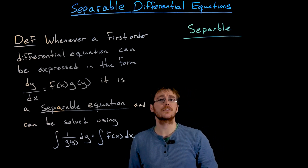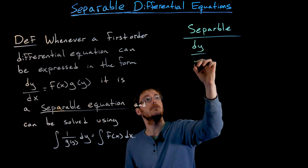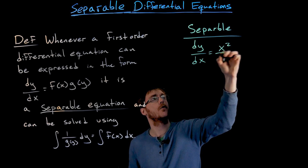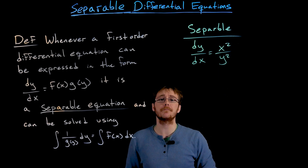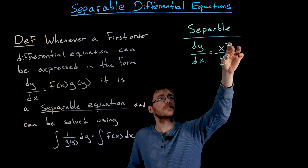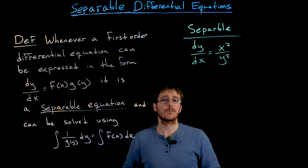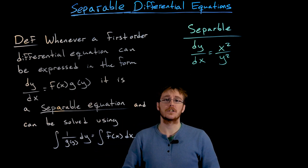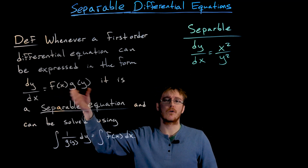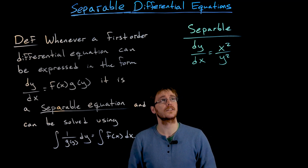Some examples of separable differential equations would be dy/dx equals x squared over y squared. The idea is we could factor the right-hand side as x squared times one over y squared, and now we have that form required for our separation of variables method. Writing it explicitly in terms of f(x) times g(y) is maybe a little over-complicating the process.